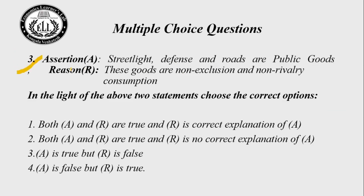Question number 3. Assertion A: Streetlights, defence, and roads are public goods. Reason R: These goods are non-exclusion and non-rivalry in consumption. Both statements are right, and R is the correct explanation of A. The right answer is choice number 1.